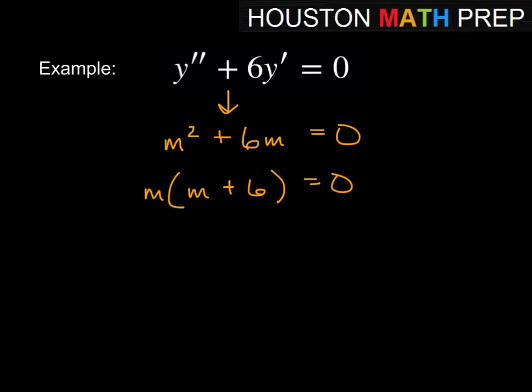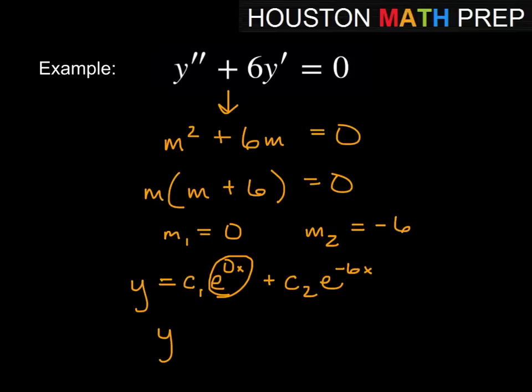And now what happens here, we set each factor equal to 0, and we get that the first value for m would be 0. The second value for m would be -6. And so if you think about plugging those values in to our solution form, you'd get c₁e^(0x) + c₂e^(-6x). But if you look at e^(0x), we'd get e^0, right, no matter what x was. So that would give you a value of 1 for this. So the way we'll really write this, when we get m = 0 as one of our roots, then this will just be c₁ + c₂e^(-6x).